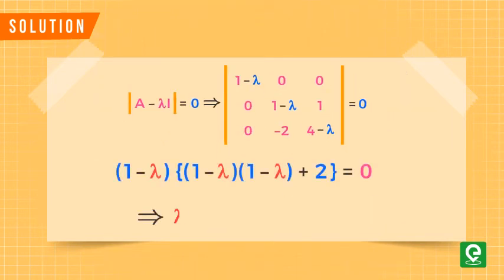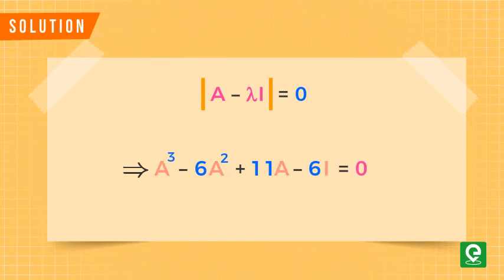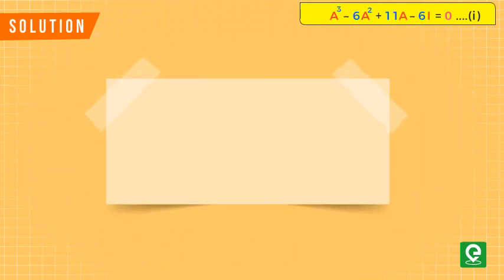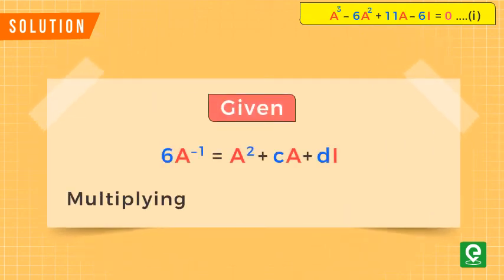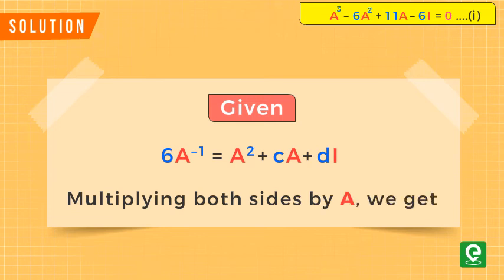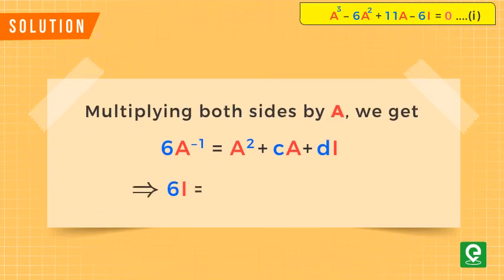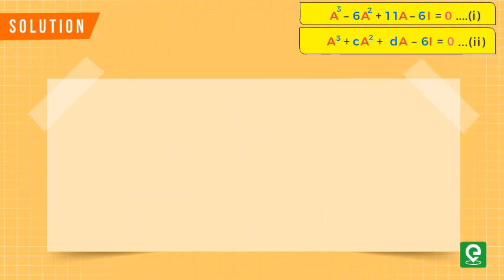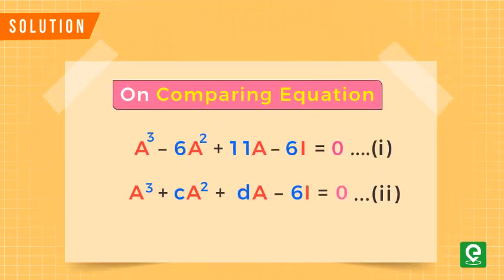Simplifying this, we get lambda cubed minus 6 lambda squared plus 11 lambda minus 6 equals zero. Replacing lambda with A, we call this equation 1. Coming back to the given equation and multiplying both sides by A, we get 6I equals A cubed plus cA squared plus dA, which simplifies to A cubed plus cA squared plus dA minus 6I equals zero — we call this equation 2.